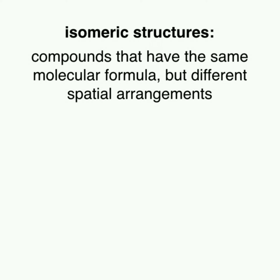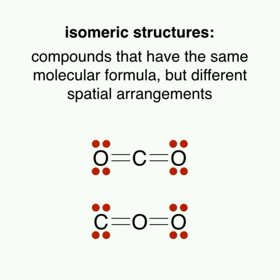Let's look at CO2 as an example. The first isomer of carbon dioxide is the one we commonly see — carbon is the central atom and it's bonded to two oxygens, one on each side. A second isomer of carbon dioxide can look like this: one of the oxygens is the central atom, with a carbon bonded to one end and an oxygen bonded to the other. These two structures are different compounds with different physical properties.